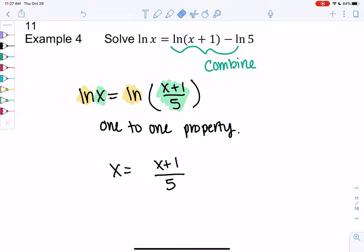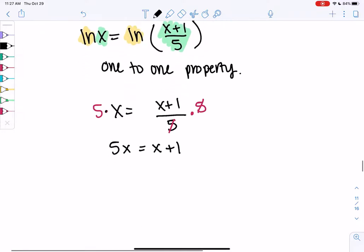So x is equal to x plus 1 over 5. Now we just have a linear equation. I'll multiply both sides by 5. 5x equals x plus 1. Then subtract x. 4x equals 1. And we get x equals 1 fourth.